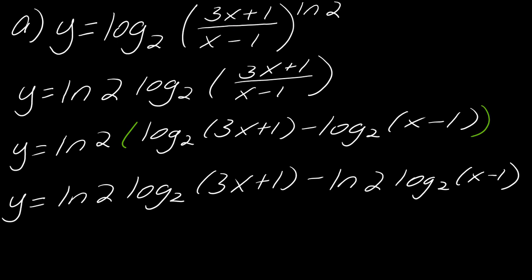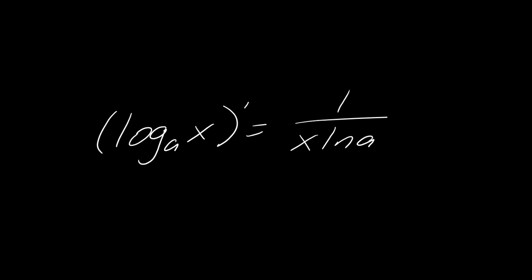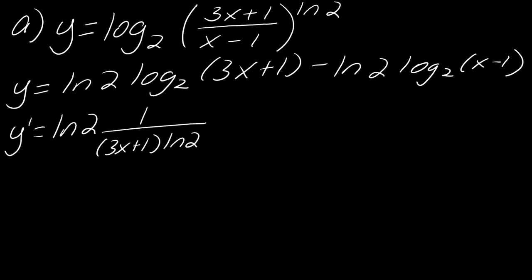Now, let me clear some space and get started. Remember the derivative for log base a of x — keep that structure in mind. My natural log of 2 is just a constant, so I write that down. Then it's going to be 1 over — notice that instead of having just a plain x, I have 3x + 1 — so I write 3x + 1 times the natural log of 2. Since this was 3x + 1 instead of just x, I have to use the chain rule and take the derivative, which gives times 3.